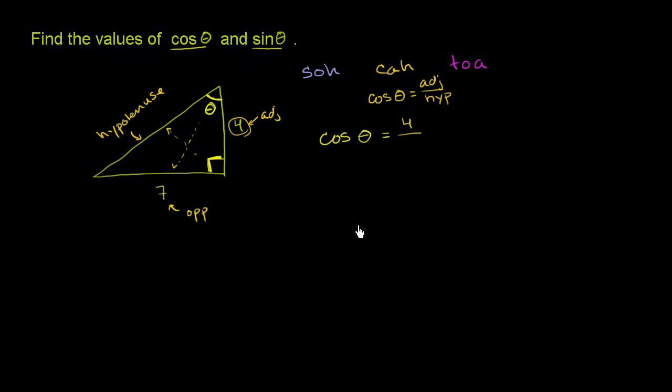What is the hypotenuse? Well, we know what side is the hypotenuse, but they haven't given us the length yet. But we can figure it out using the Pythagorean theorem. We have two sides of a right triangle. We can always figure out the third side. We know that the sum of the squares of the two shorter sides is going to be equal to the square of the hypotenuse.